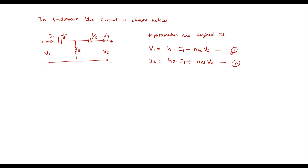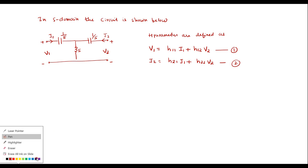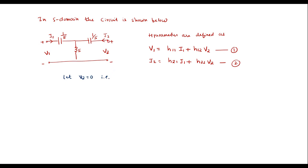In equations 1 and 2, if we make V2 equal to 0, we can find H11 and H21. If we make I1 equal to 0, we can find H12 and H22. Let V2 equal to 0, which means we short-circuit terminals 2 and 2-dash.